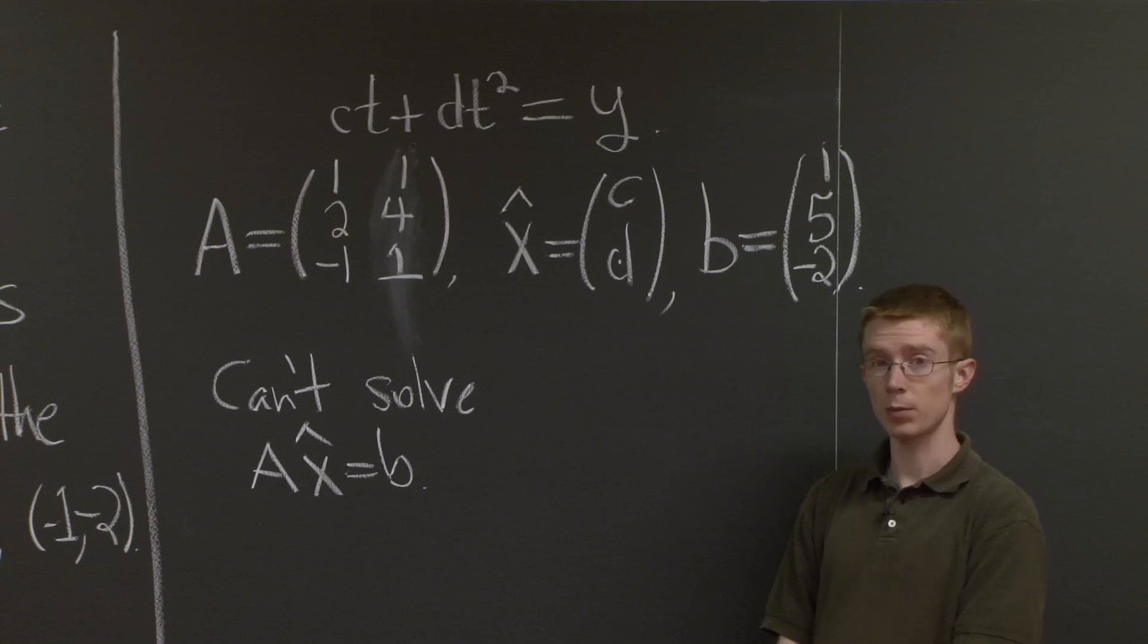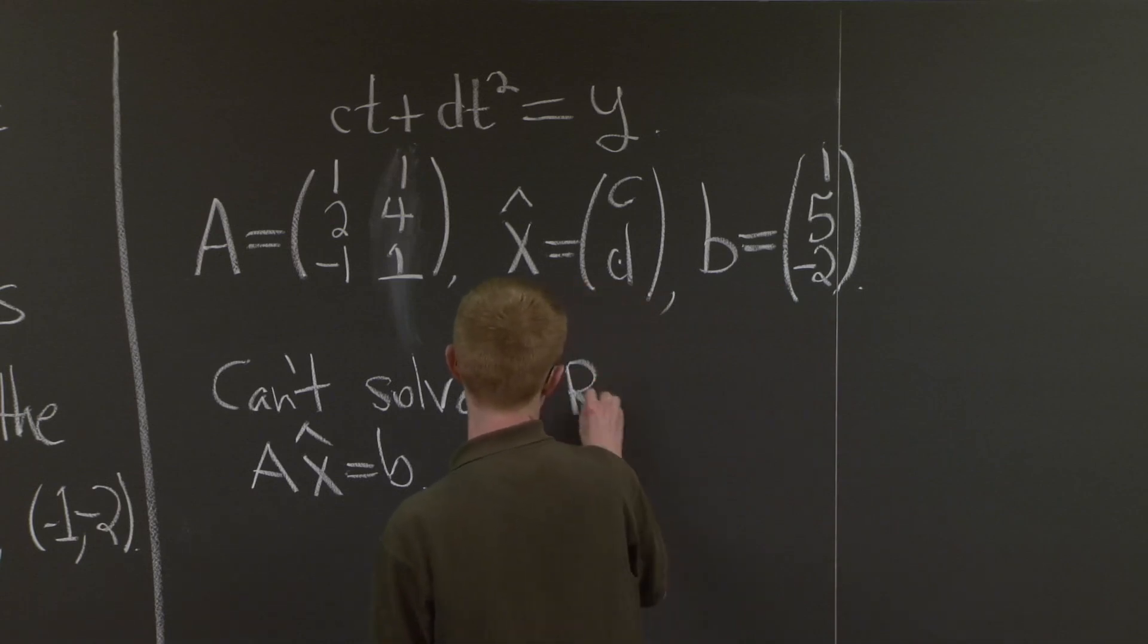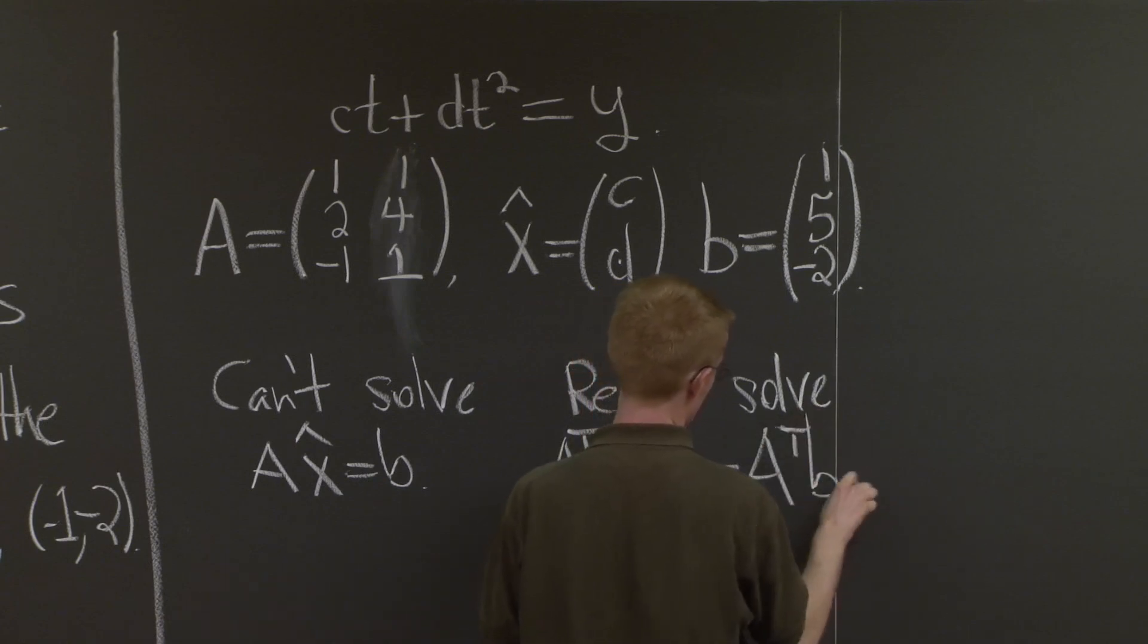Because we only have a chance of solving Ax̂ equals something if it's in the column space of A. And remember from our projections part of the class that this is the same as solving A^T A x̂ = A^T b. Good.